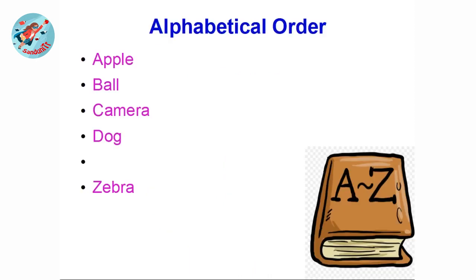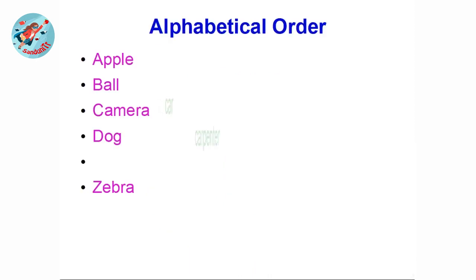For example: apple, ball, camera, dog, zebra — these words are all arranged in alphabetical order in a dictionary.